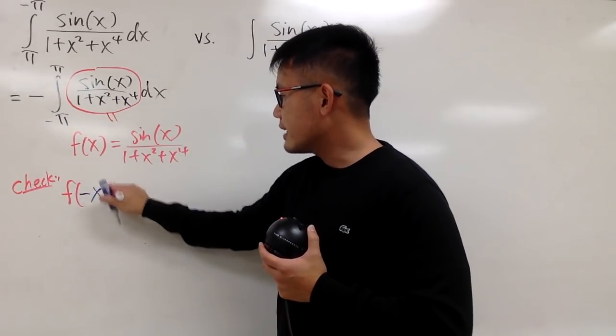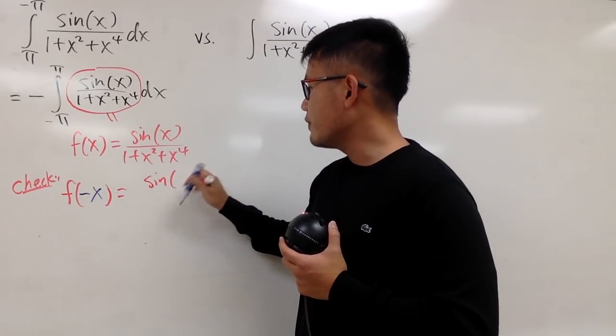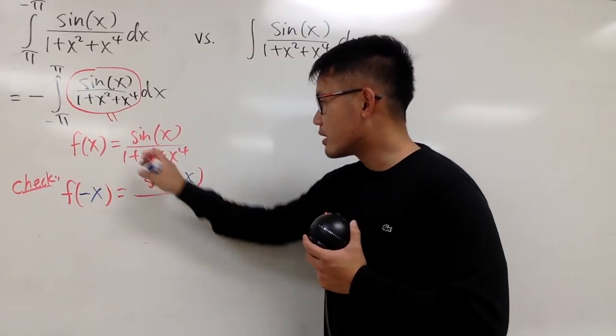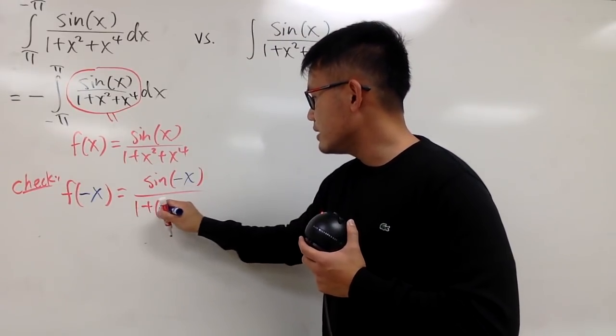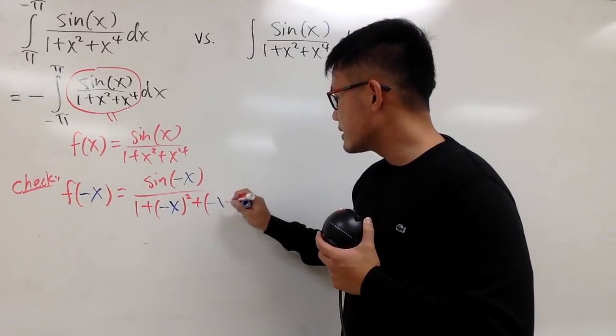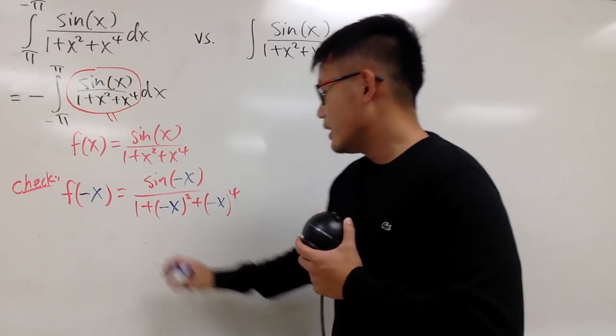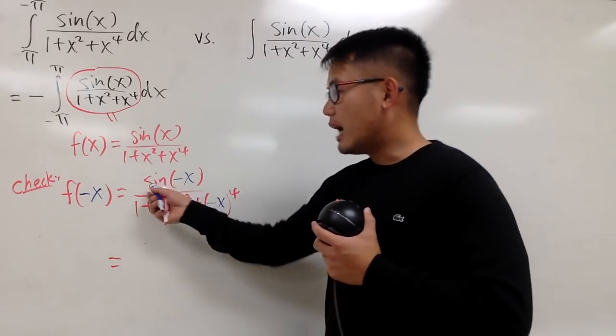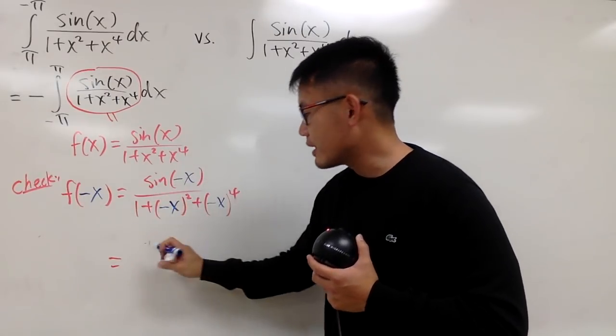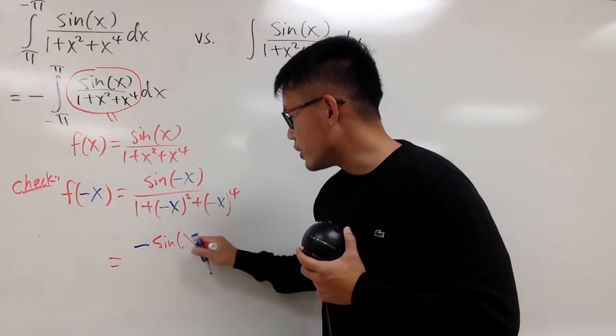So f of negative x, this means you plug in negative x into all the x here, so you have sin of negative x here, and then on the denominator, you have 1 plus parentheses negative x, and then you square that, and then you add it with negative x, and then you raise that to the fourth power. Okay, on the top, sin is an odd function, so that means negative x, you can put the negative to the front. This becomes negative and then sin of just x.